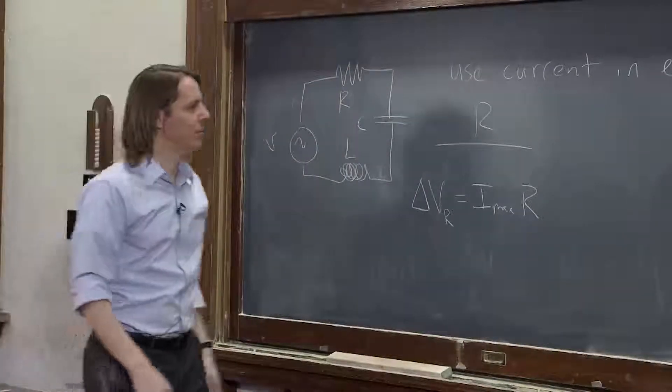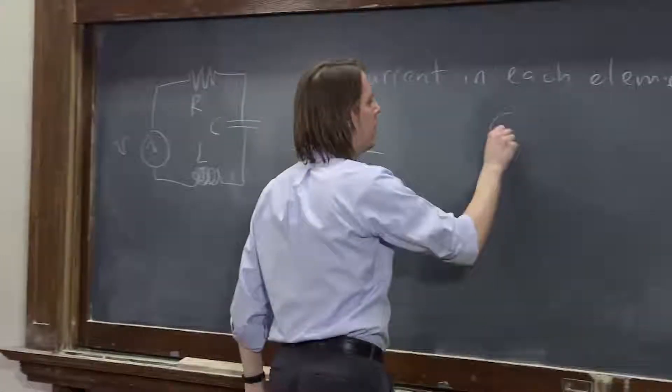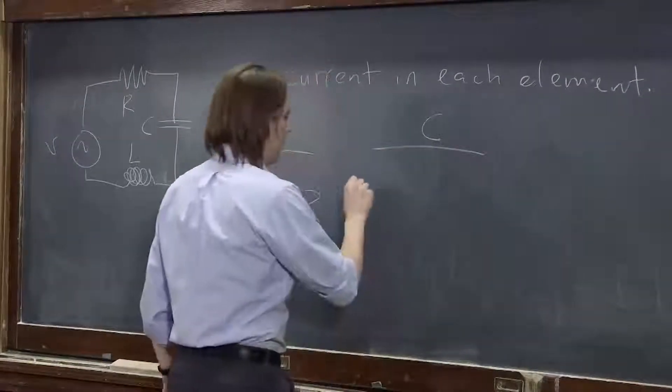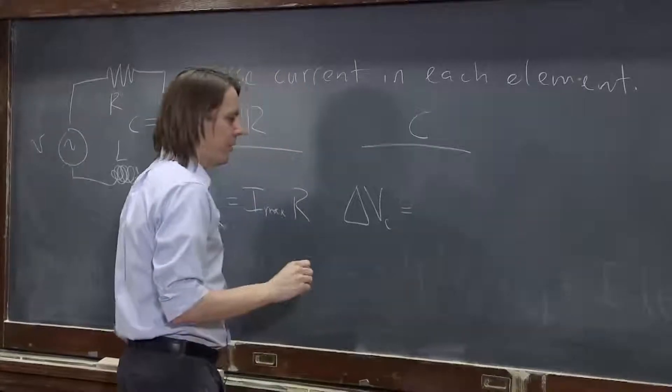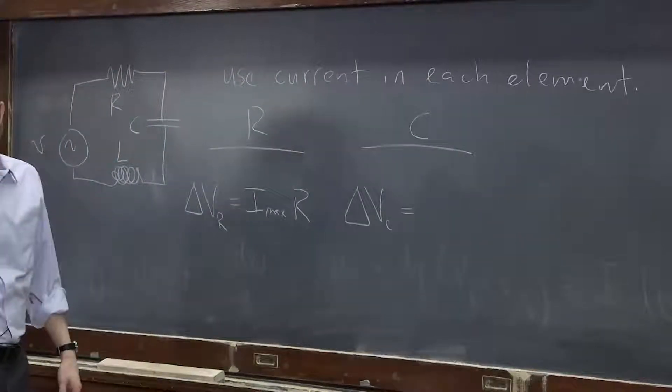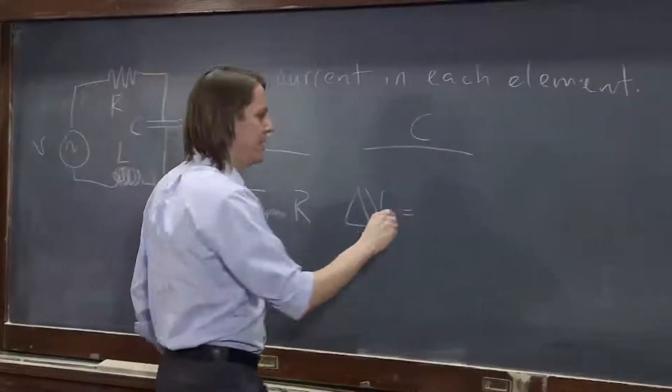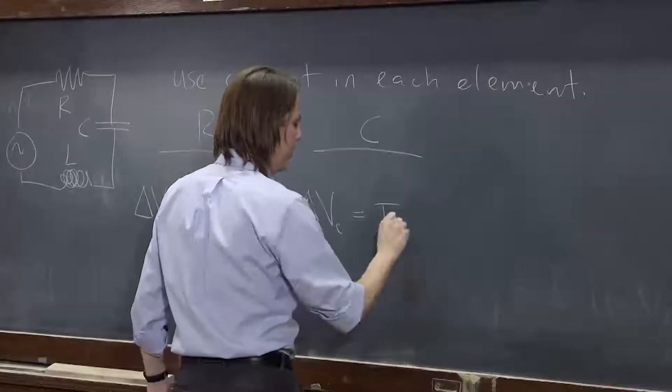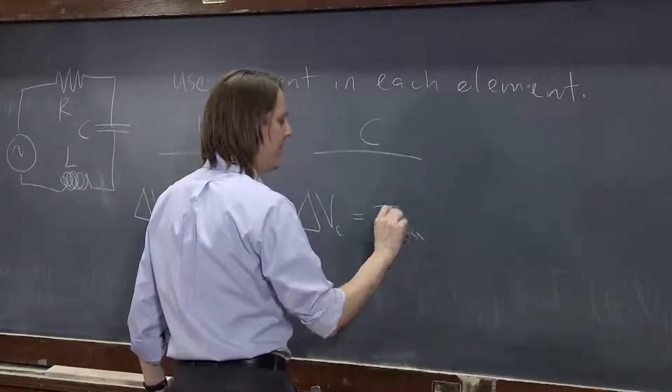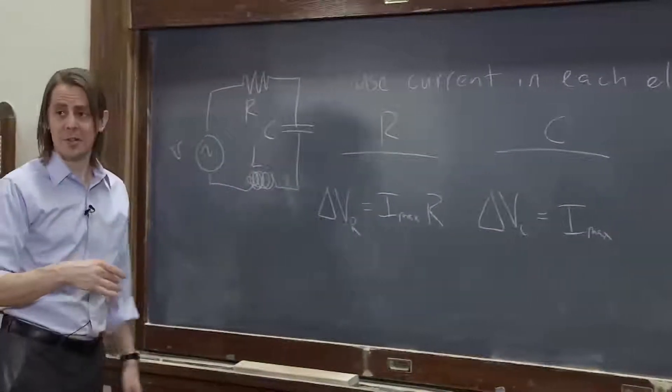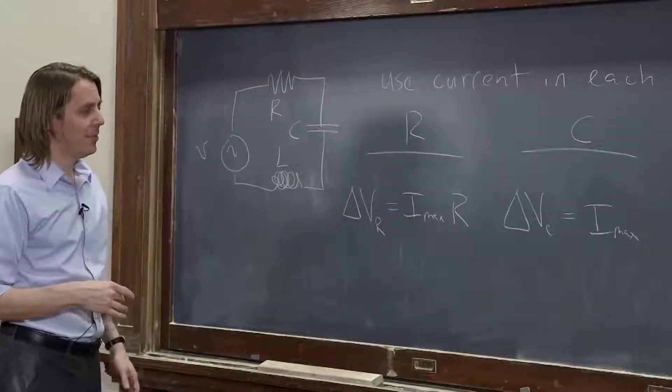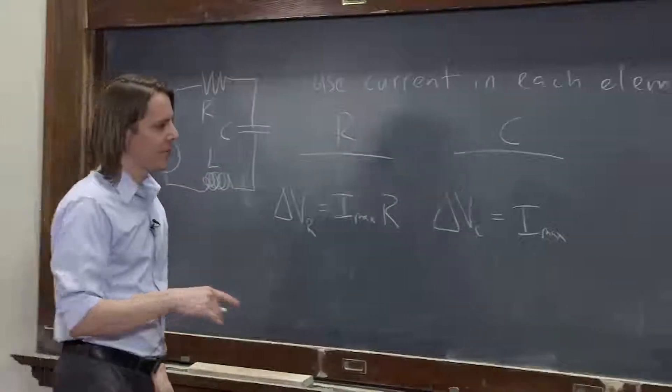That's got to be divided up between the three. The capacitor, delta V across the capacitor. Well, now you can use the generalized Ohm's law. V equals Ir, well, V equals Imax, that amplitude, times the impedance, or times the capacitive reactance, the capacitive part of the impedance. So that's Imax times Xc.